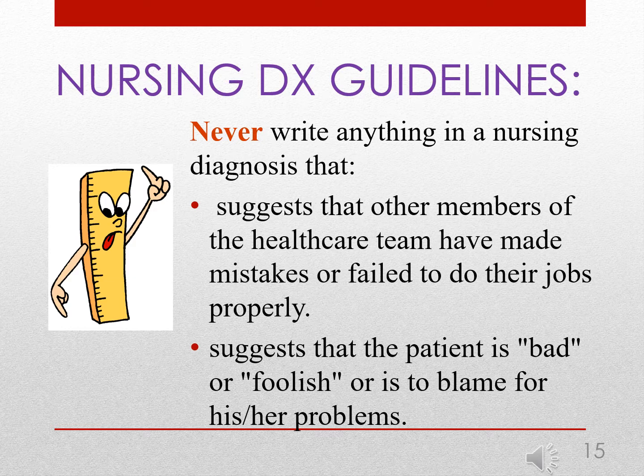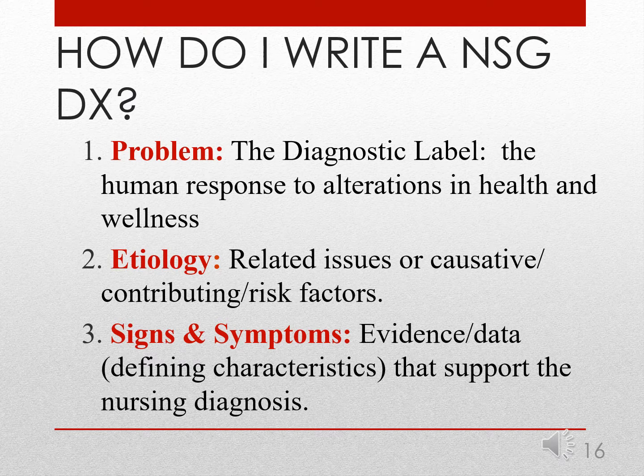The guidelines to writing a nursing diagnosis include never writing anything that suggests that another member of the healthcare team is at fault or to blame, or that the patient is bad or foolish or also at fault. When writing a nursing diagnosis, we write it in a three-step process: problem, etiology, and then signs and symptoms.